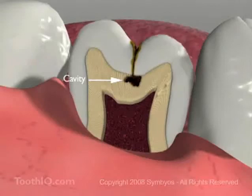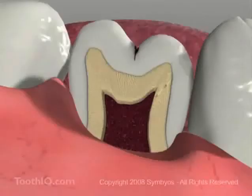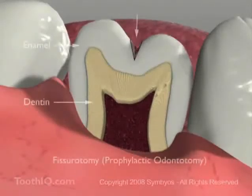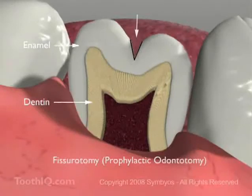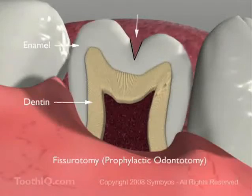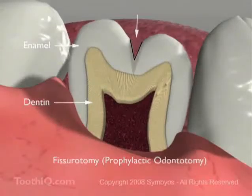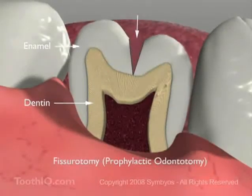Over the years, many attempts to stop pit and fissure tooth decay have been made. Here are the most common, their strengths and weaknesses. Fissurotomy, or prophylactic odontotomy, involves funneling the grooves open with a cone-shaped dental burr. If done early enough in grooves that do not extend through the dentin layer, it may be possible to perform this procedure and nothing further. More commonly, however, the deepest pits and fissures do extend close to or into the dentin layer, and this procedure must be followed by placement of a filling of some type. The procedure must also be performed by a dentist, since it involves removal of tooth structure.